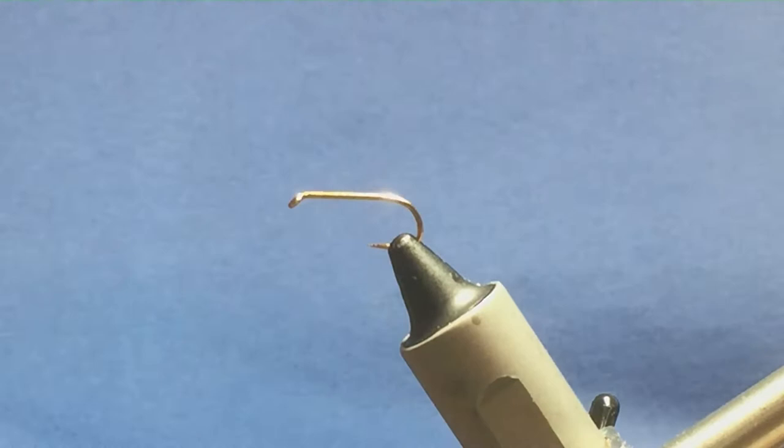This pattern here is a pattern that was first tied by a gentleman called Cyril Conlon, and I believe Cyril would have fished this fly on Loch Corrib. So I'll just go and show you how to tie the fly.